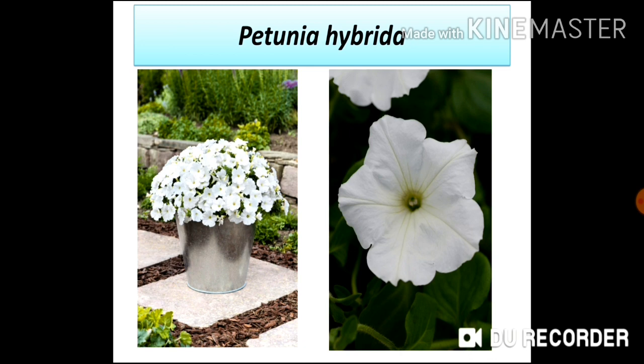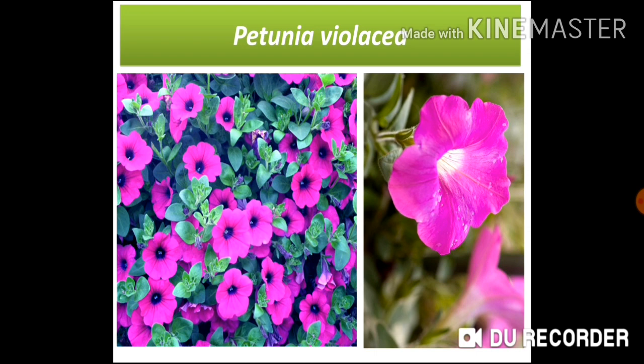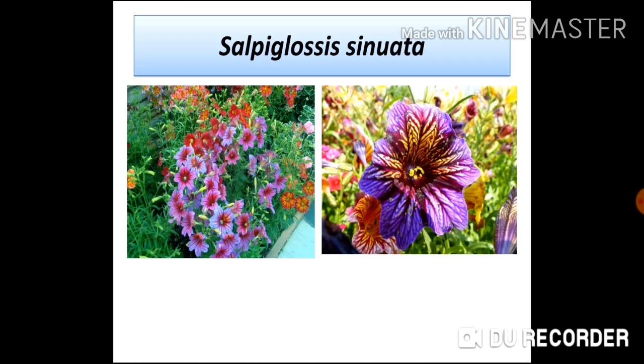Petunia hybrida is an ornamental plant of family Solanaceae with divinely beautiful white flowers, planted in pots, gardens, and parks for their aesthetic nature. Petunia violacea has violet-colored magnificent flowers and adds beauty to gardens, parks, and roadsides.